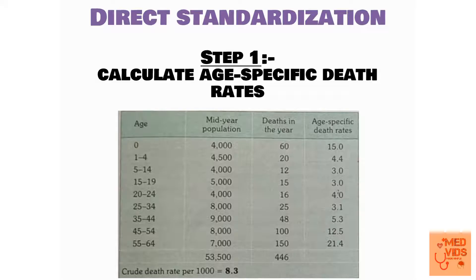Age-specific death rate is calculated by dividing the number of deaths occurring in the year by the mid-year population in that specific age group, multiplied by 1,000. For the less-than-one-year age group (age 0), the mid-year population is 4,000 and the number of deaths is 60. So we divide 60 by 4,000 and multiply by 1,000 — you get 15. That is the age-specific death rate for under one year of age. By doing this for each row you will have age-specific death rates for all age groups.